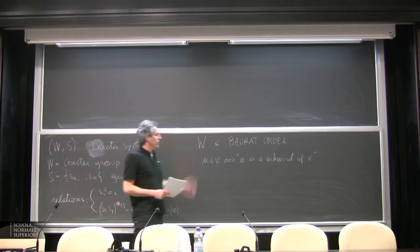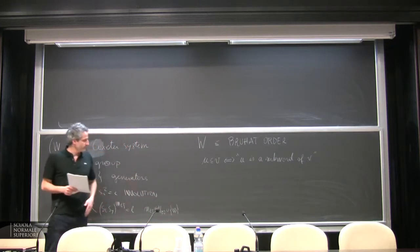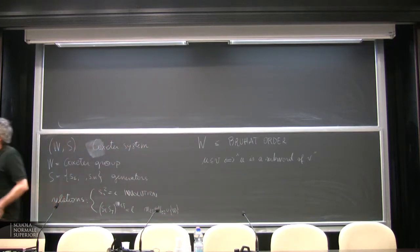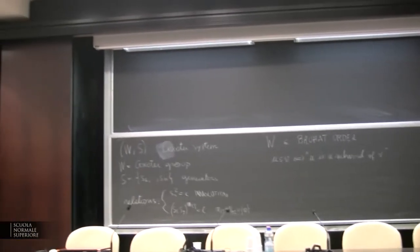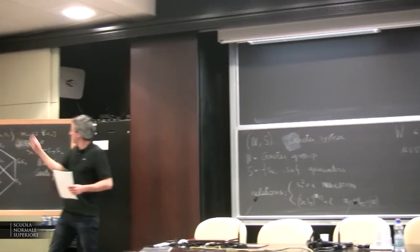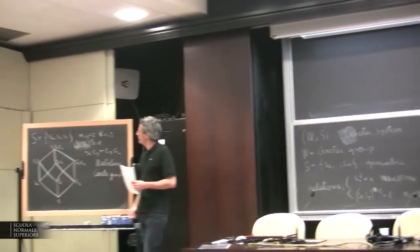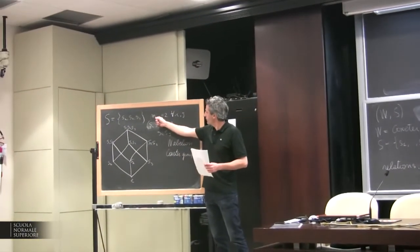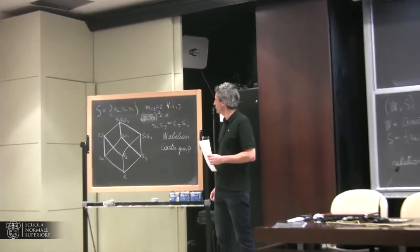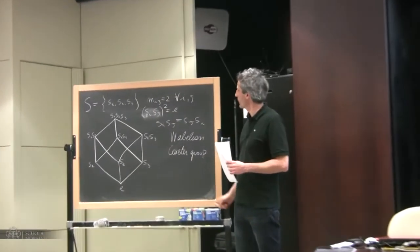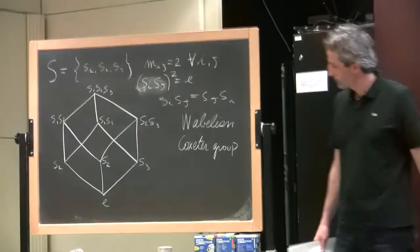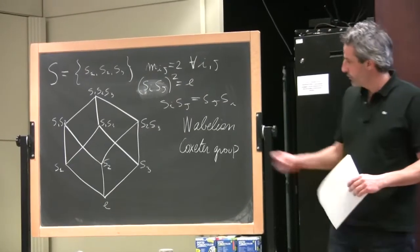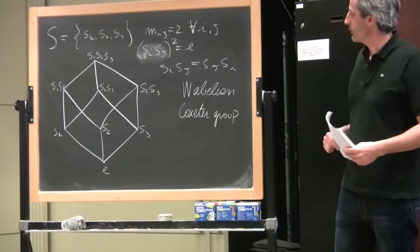The broad example of Coxeter groups is the symmetric group, but here we have a simple example. If we take three generators and all the integer entries equal to 2, we have that the generators commute, so we get an abelian Coxeter group.